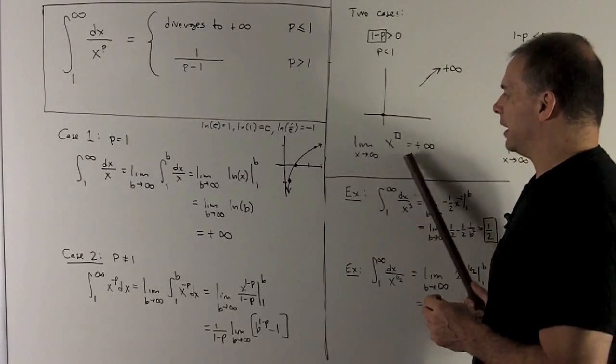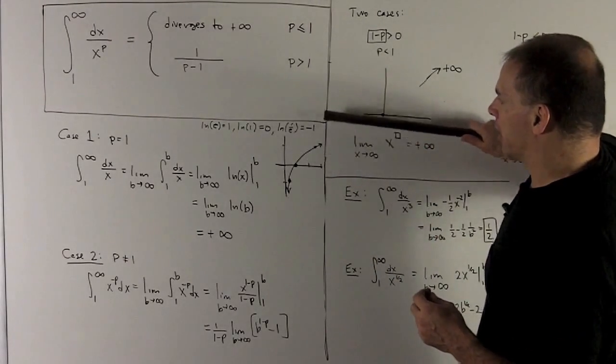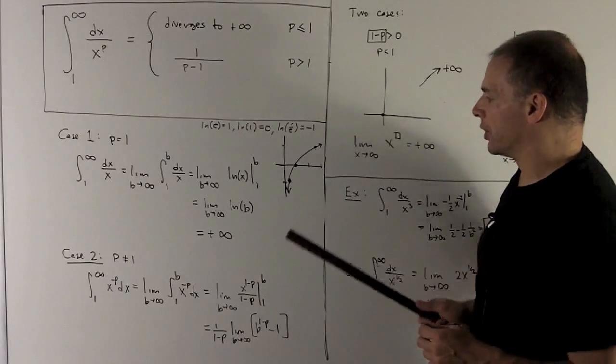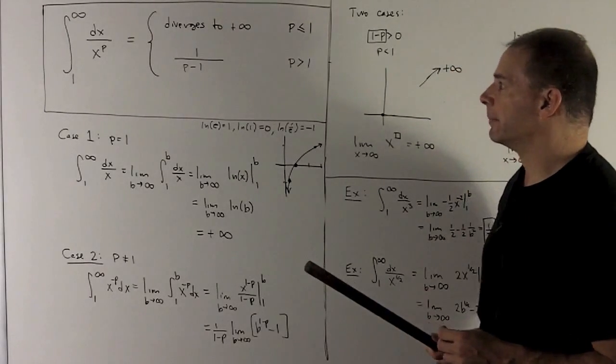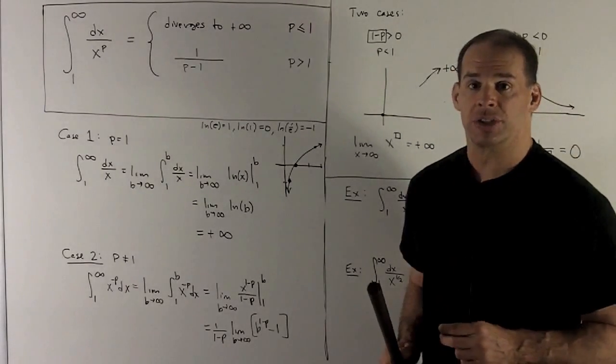And note, as x goes out to infinity, the y values are getting bigger and bigger and bigger. So this is going to go to plus infinity. So that'll definitely diverge to plus infinity.